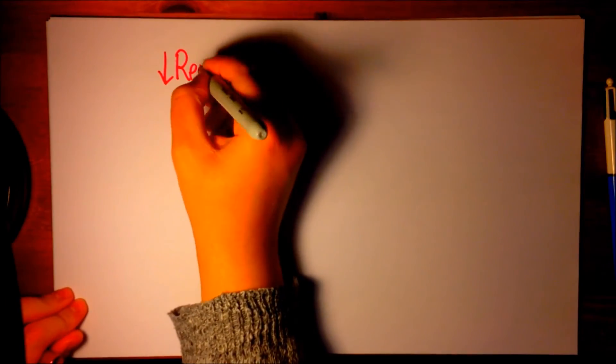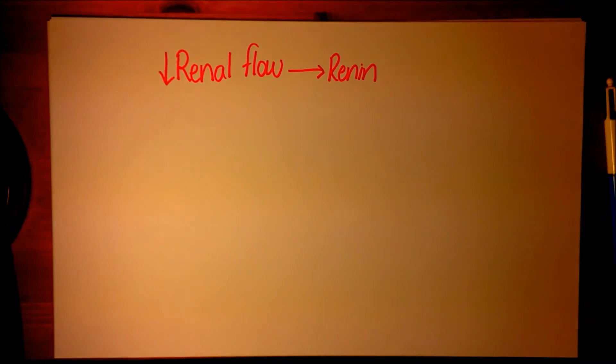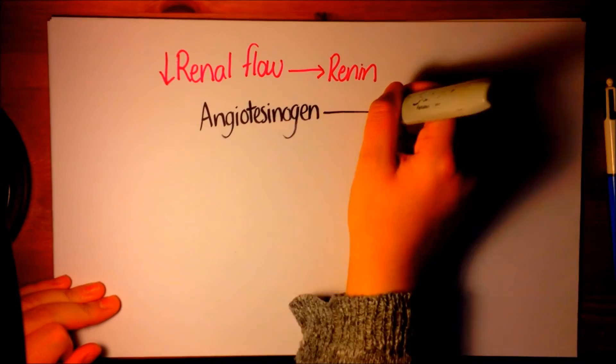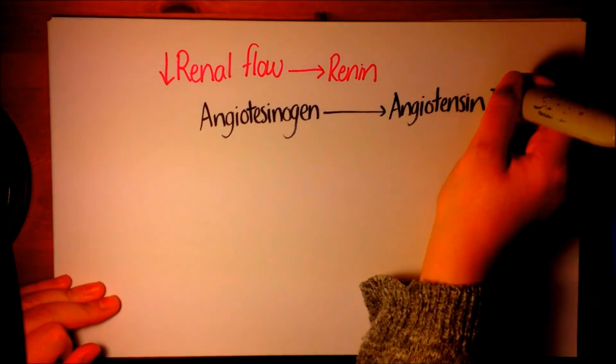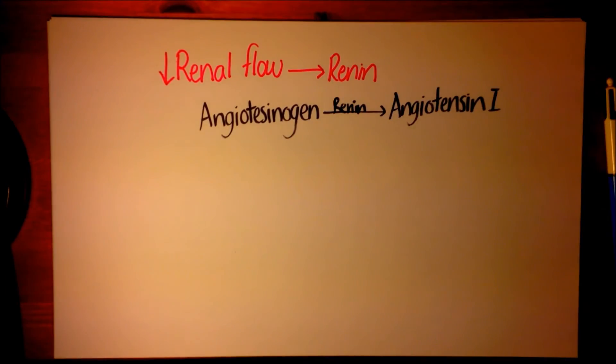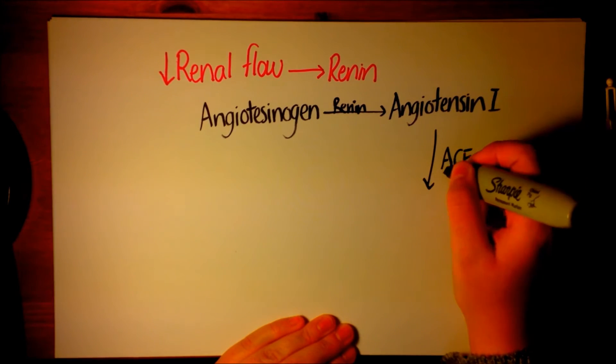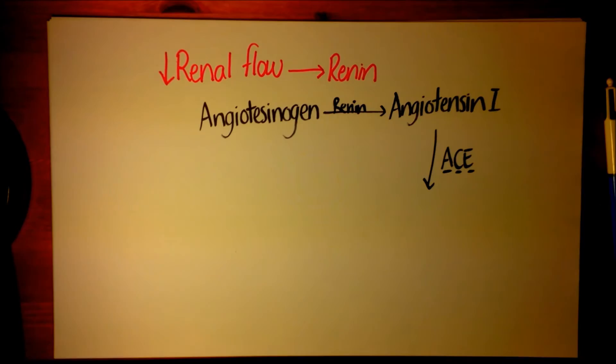Decreased renal blood flow subsequently leads to increased release of renin, which is an enzyme secreted by the kidneys to promote the conversion of a protein called angiotensinogen to angiotensin 1. Angiotensin 1 is then converted by angiotensin converting enzyme to angiotensin 2.